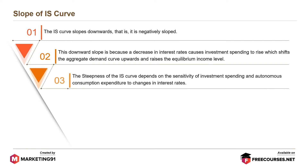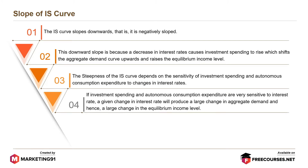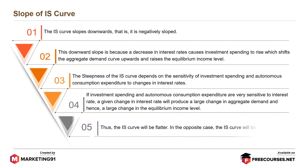The steepness of the IS curve depends on the sensitivity of investment spending and autonomous consumption expenditure to changes in interest rates. If investment spending and autonomous consumption expenditure are very sensitive to interest rate, a given change in interest rate will produce a large change in aggregate demand and hence a large change in the equilibrium income level. Thus, the IS curve will be flatter. In the opposite case, the IS curve will be steep.